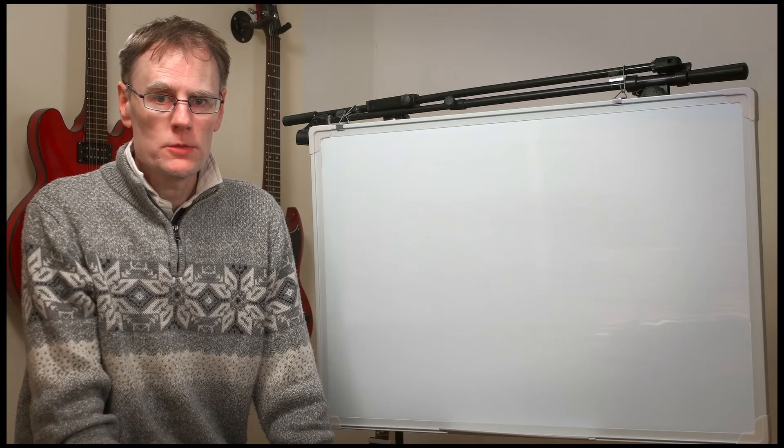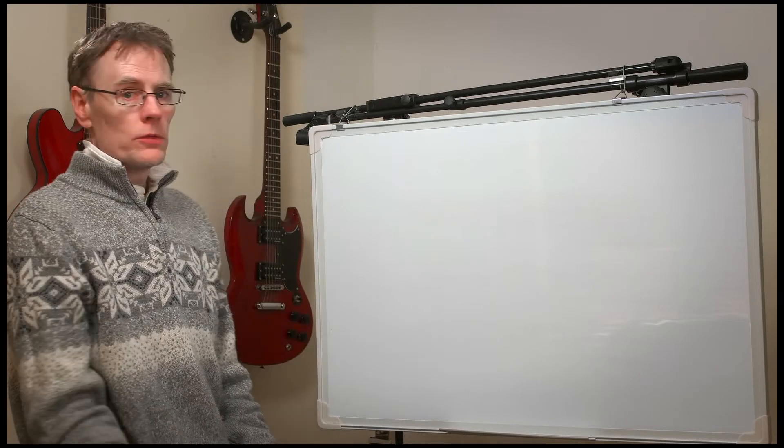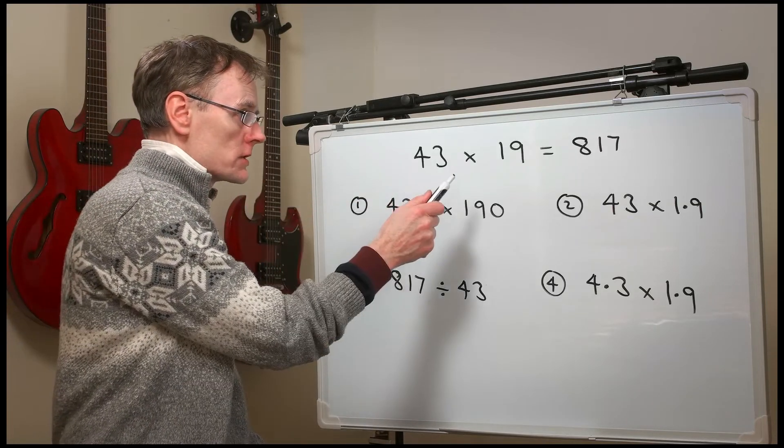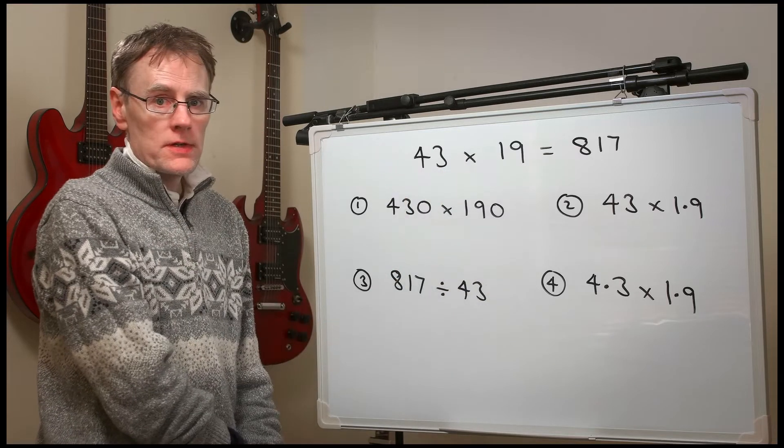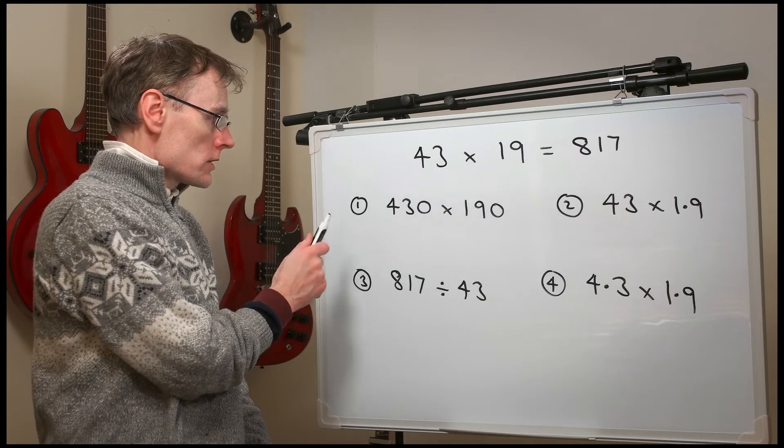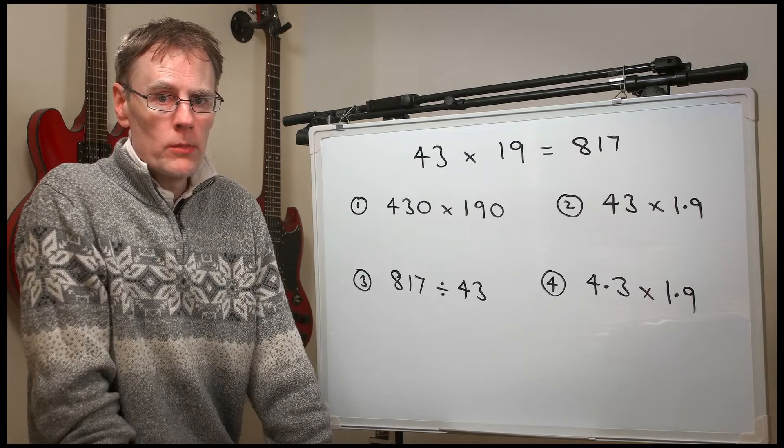Right, here are some different ones to practice. This time we're told that 43 times 19 is 817. So have a go at each one of those, the answers. And we'll have the answers in one moment.